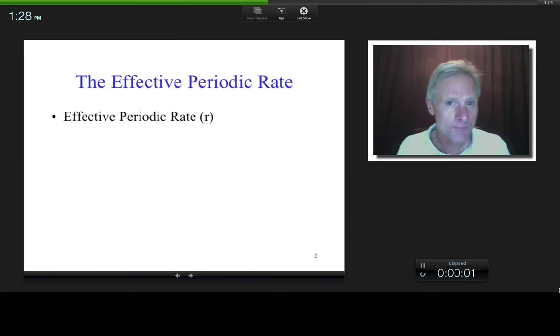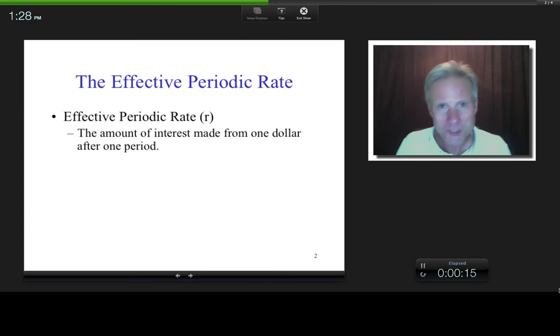The first definition is the effective periodic rate. And what is that? Well, on a percentage basis, it's the amount of interest made from one dollar or one currency unit after one period.